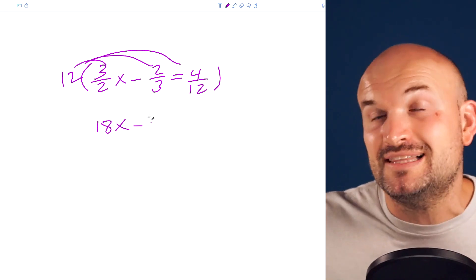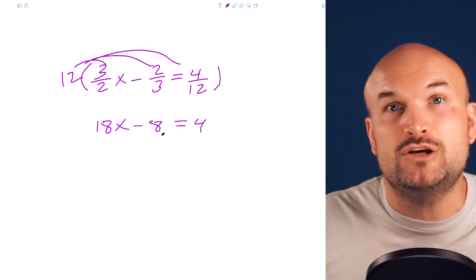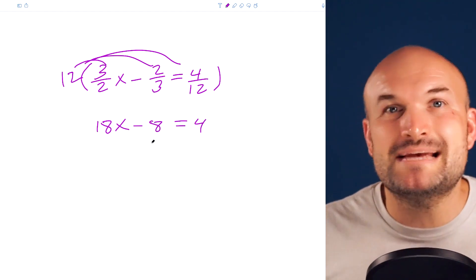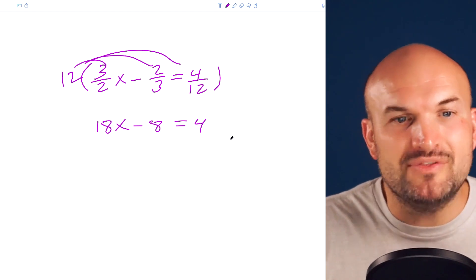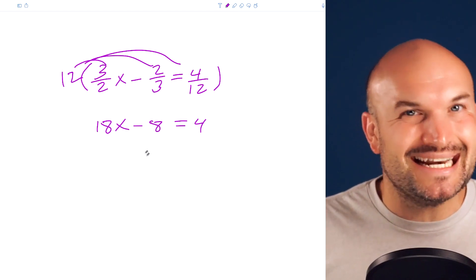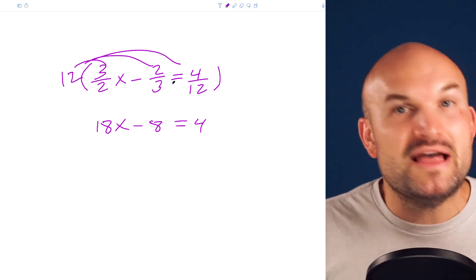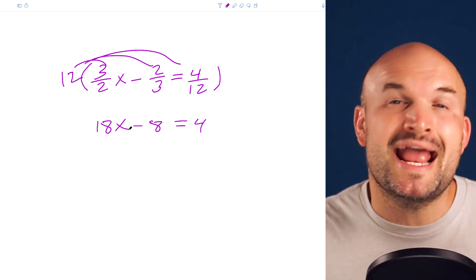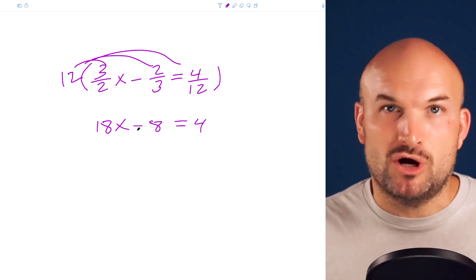The reason why this worked is because as long as we multiply everything, everything on the left and everything on the right, we produce what we call an equivalent equation. Equivalent equations have the same solutions, but you can see how this secondary equation is going to be a lot easier for me to solve for x than the equation with the fractions. So remember to make sure you multiply everything by your scalar multiple.